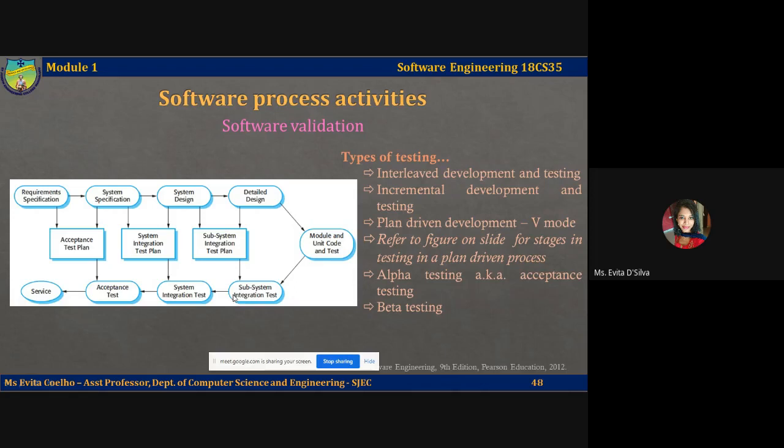If your system is large, you put many subsystems together to create the final system, and then use the system integration test plan to test the system as a whole. Just before deployment, you use the acceptance test plan — derived from the requirement specification and system specification — to verify that the system meets its functional, non-functional, and performance requirements before it is deployed at the customer's end.